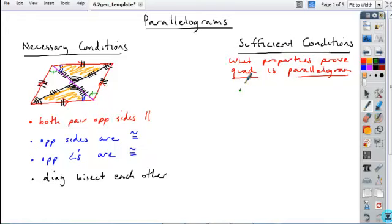Thank you. Okay, so if you know that both pairs of opposite sides are congruent, that alone is enough to show that a quadrilateral is a parallelogram.